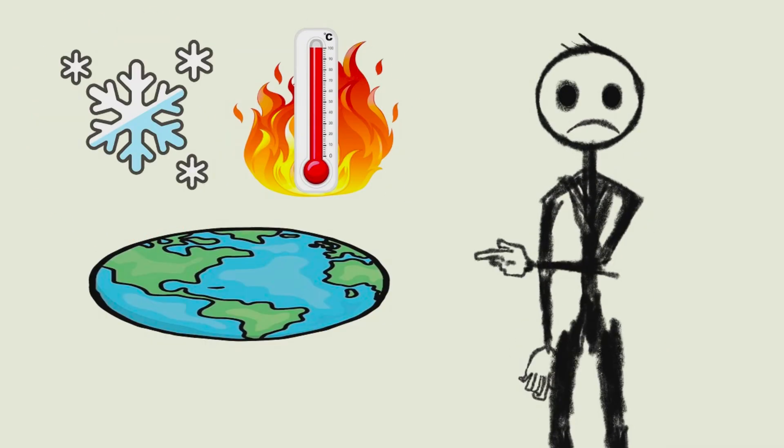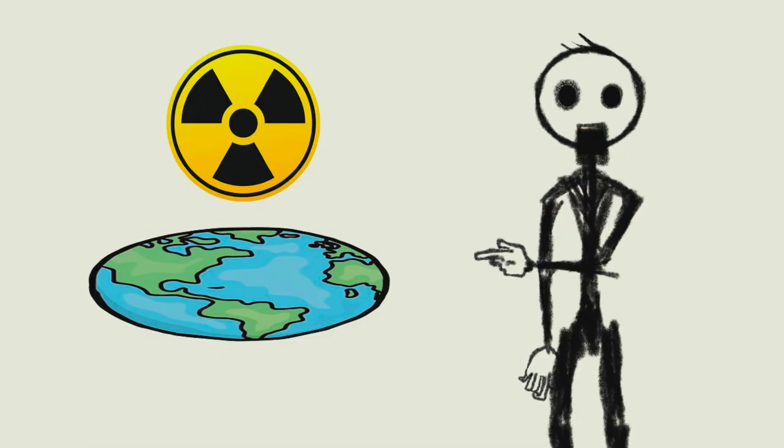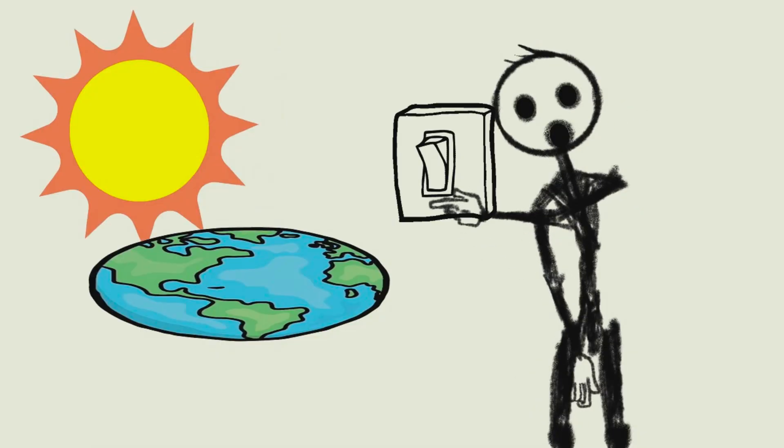So, a flat Earth means extreme weather, deadly radiation, weird gravity, and no beautiful sunsets. It's a good thing our planet is round.